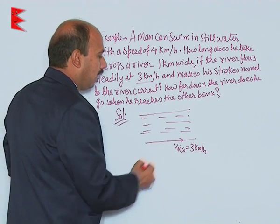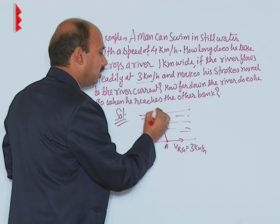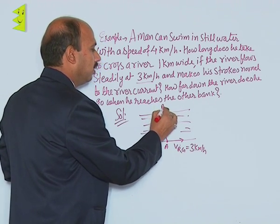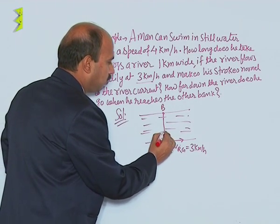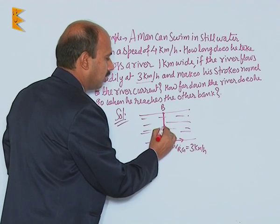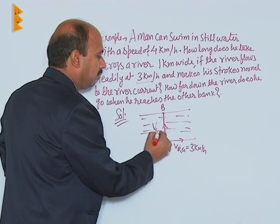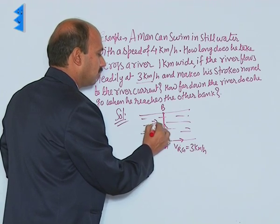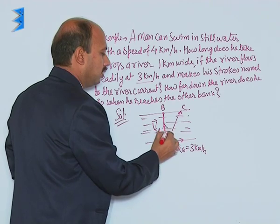So here, this is the point A. He wants to go to the point, this other bank B here. But he is making his strokes normal to the flow of the river, it means he is swimming in this direction obviously. So velocity of man, velocity of swimmer with respect to river is to this. He might be reaching somewhere here, that is C. This angle is theta.